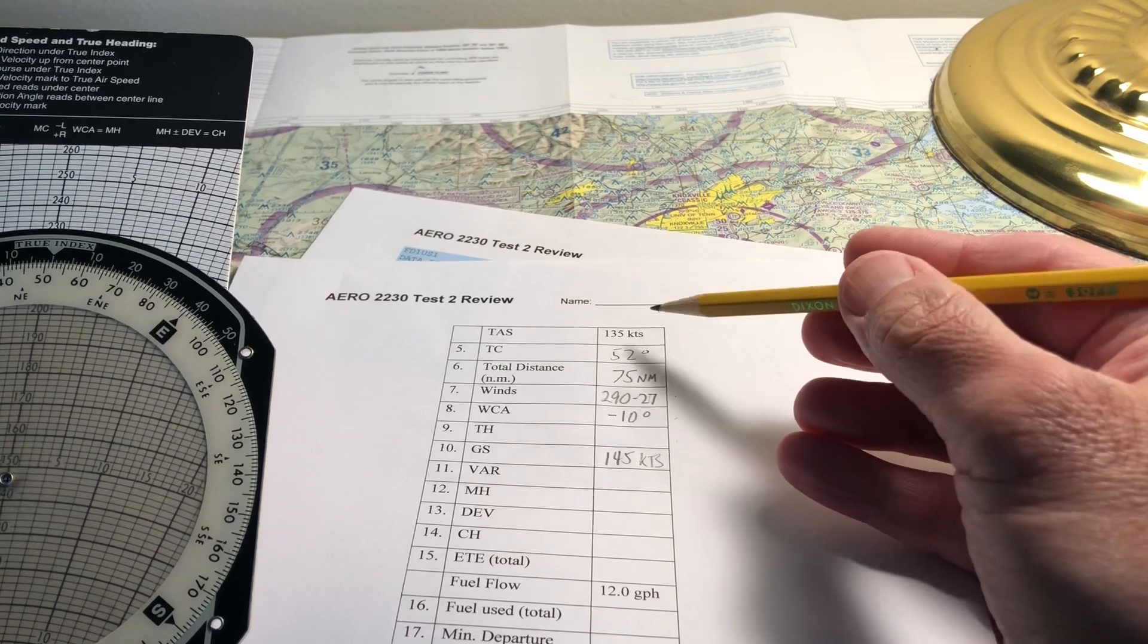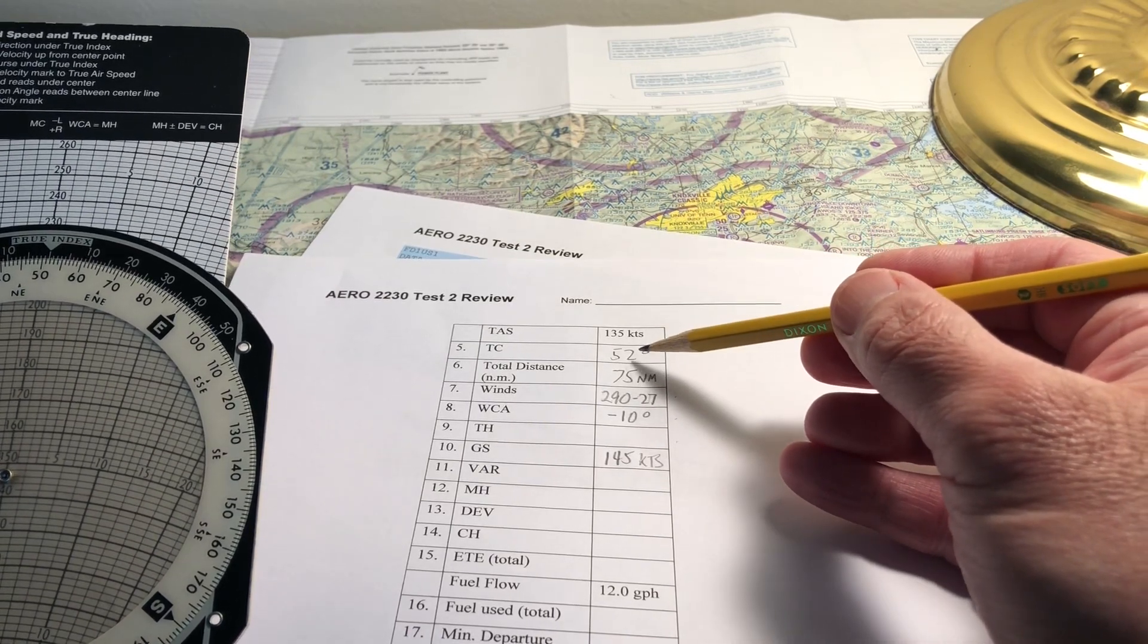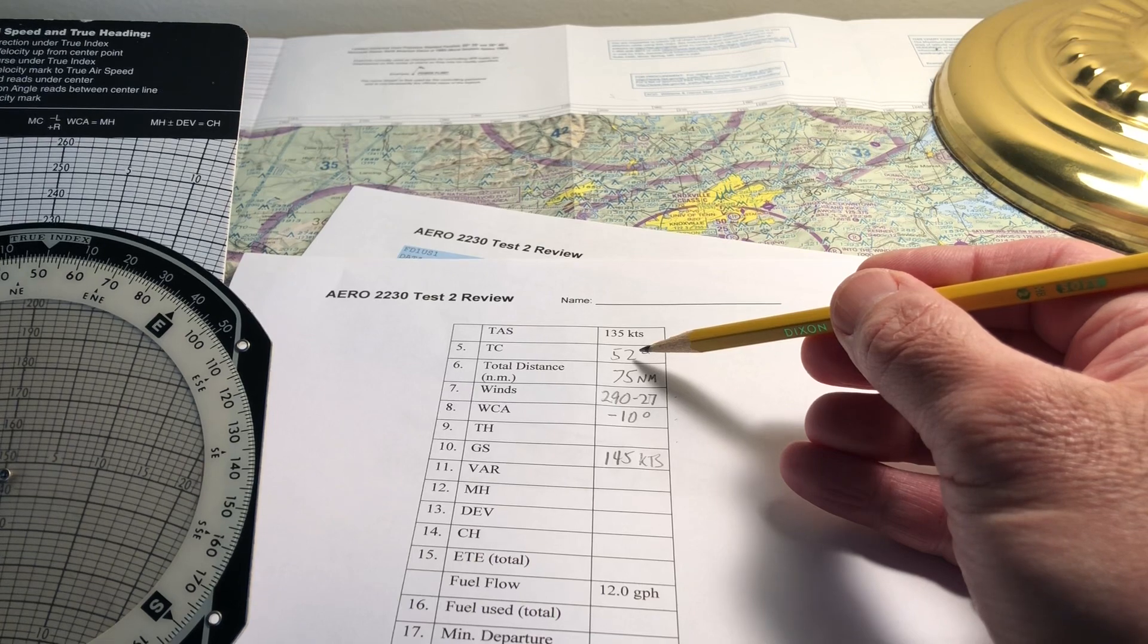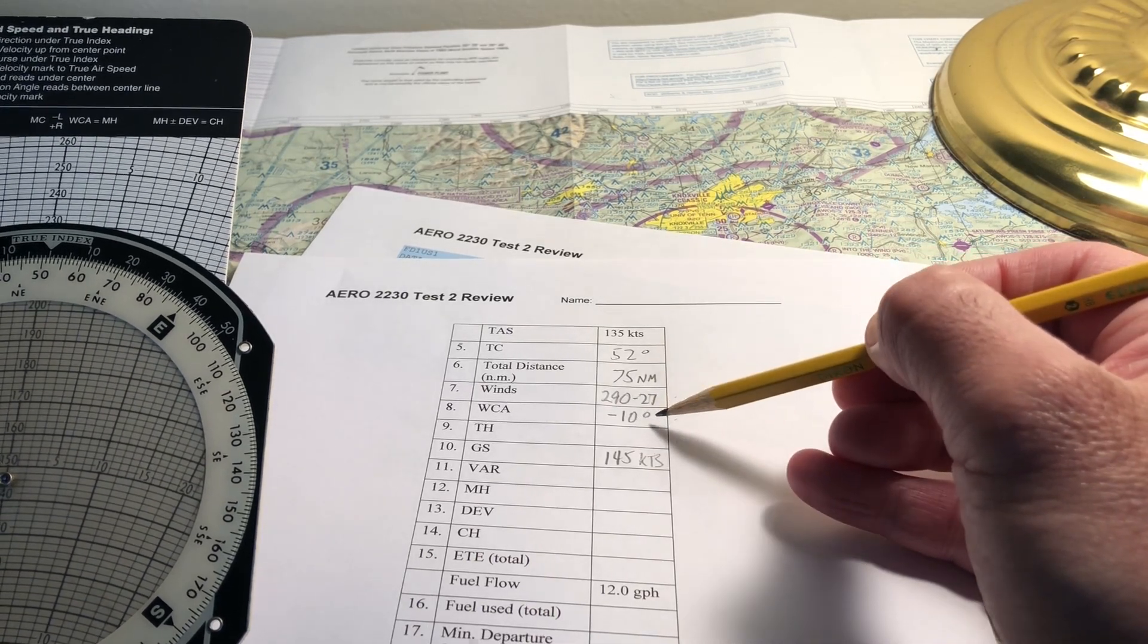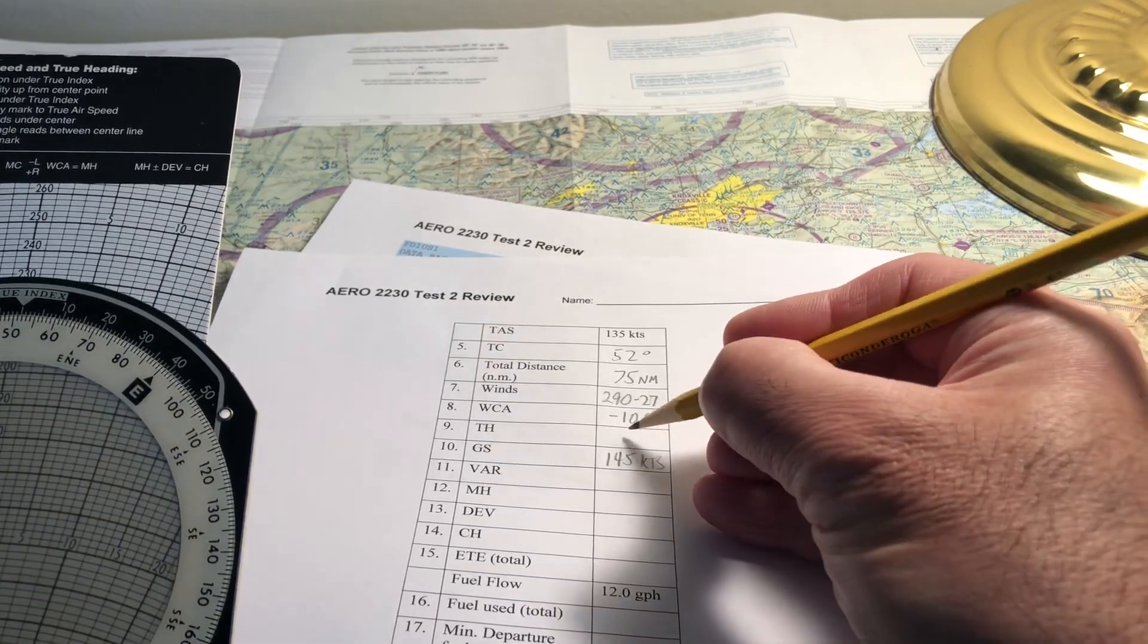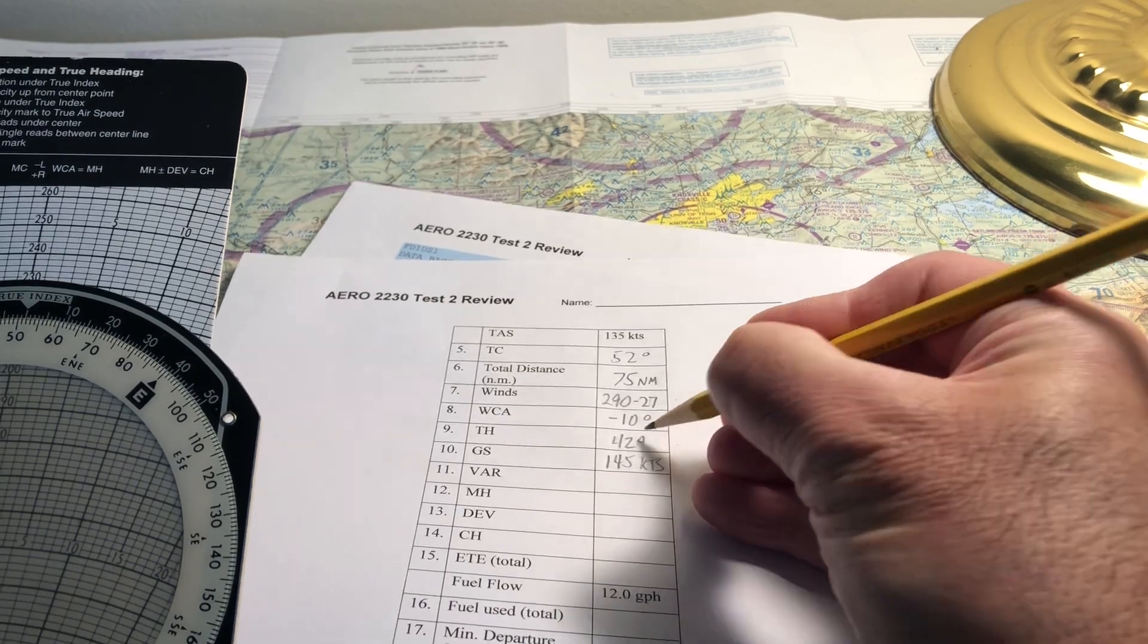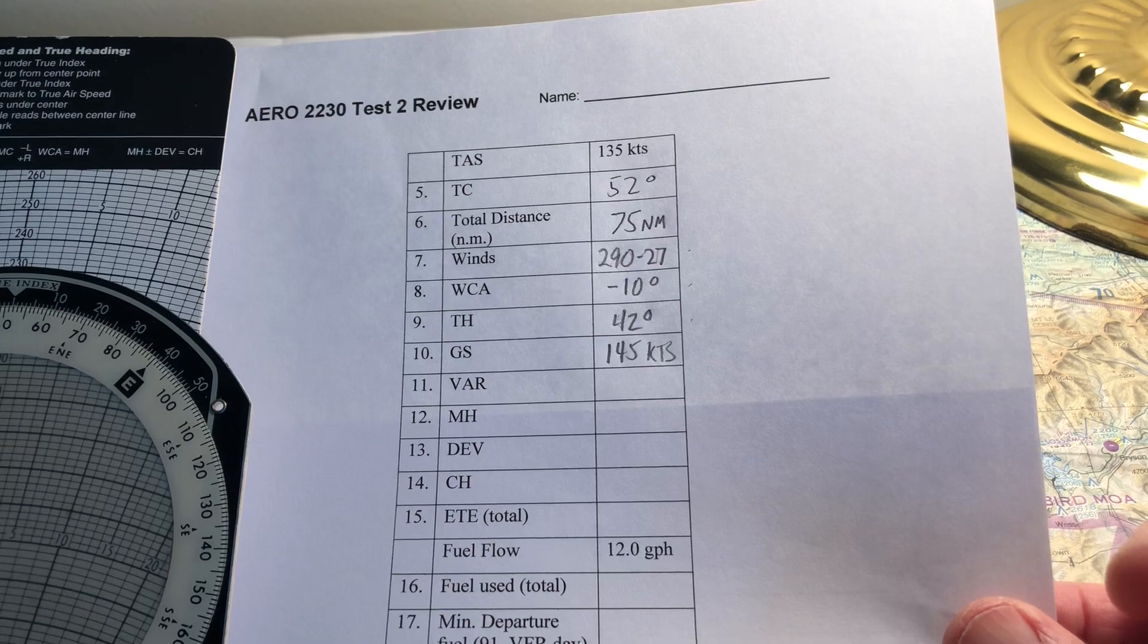So now to get the true heading, we convert the true course of 052 to a true heading by subtracting the wind correction angle of minus 10. So 52 minus 10 is 42 degrees. That is our true heading. And that's it.